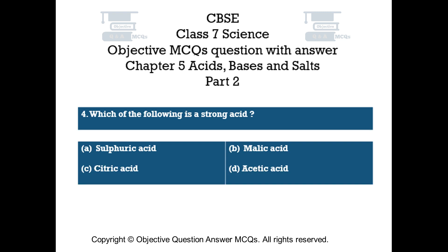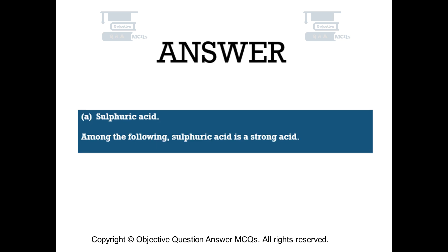Question number 4. Which of the following is a strong acid? Option A: sulfuric acid. Option B: malic acid. Option C: citric acid. Option D: acetic acid. The right answer is option A — sulfuric acid. Among the following, sulfuric acid is a strong acid.